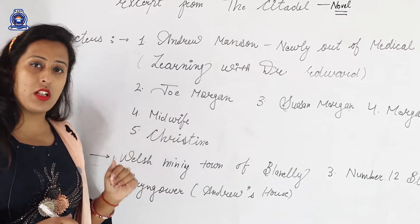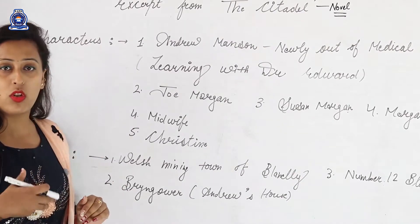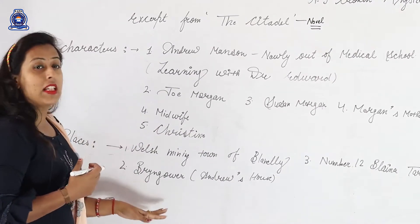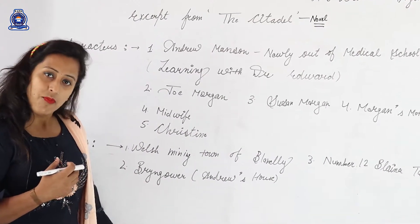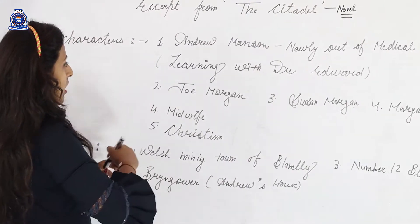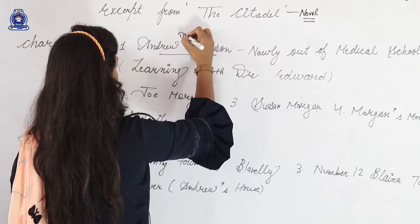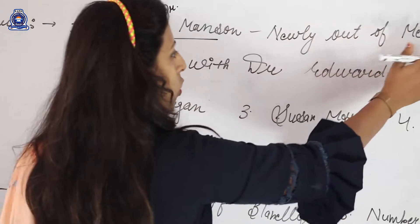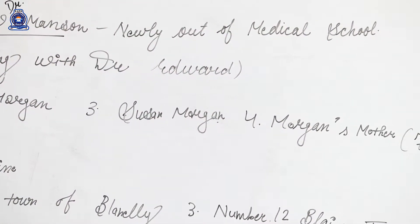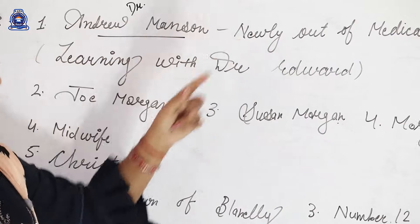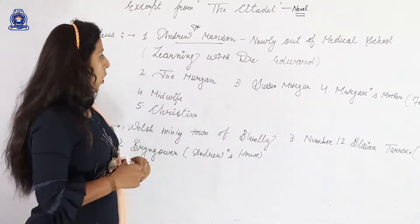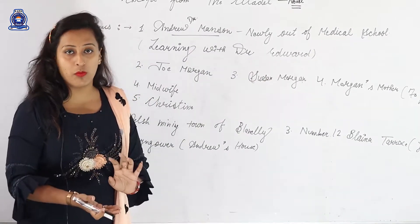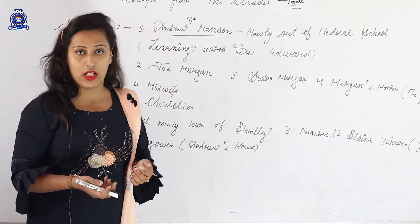Without wasting a minute, let's continue the summary. First of all, I would like to tell you about the characters of the chapter and then about the places related to it. The first character is Andrew Manson — that is, Dr. Andrew Manson. He is a doctor by profession, newly out of medical school, and he is learning with Dr. Edward — learning how to do operations and continue his doctoring.